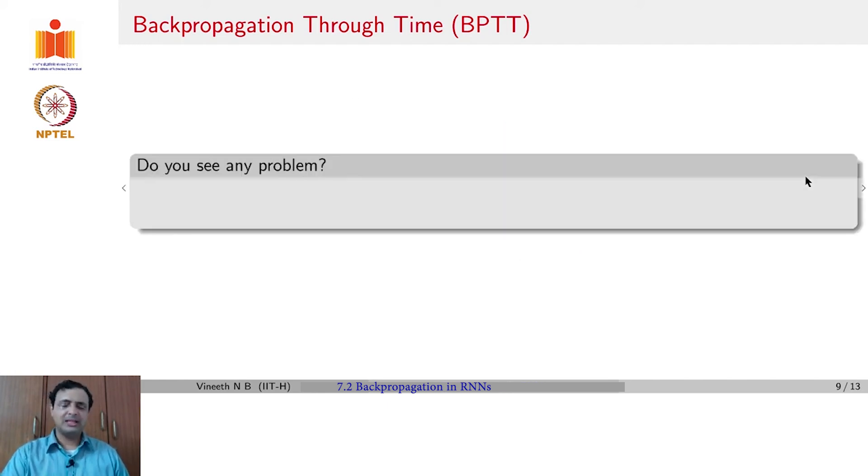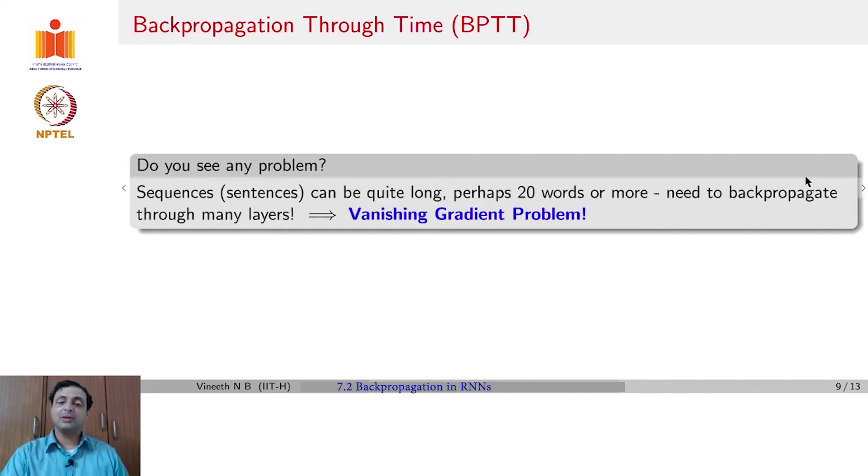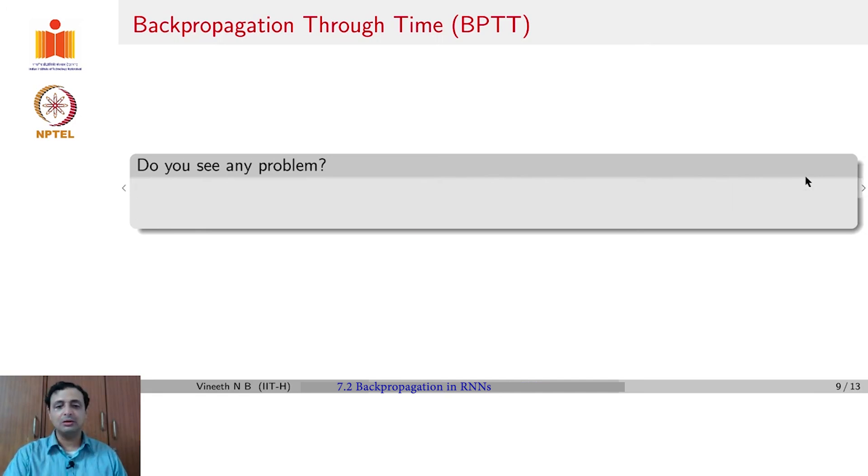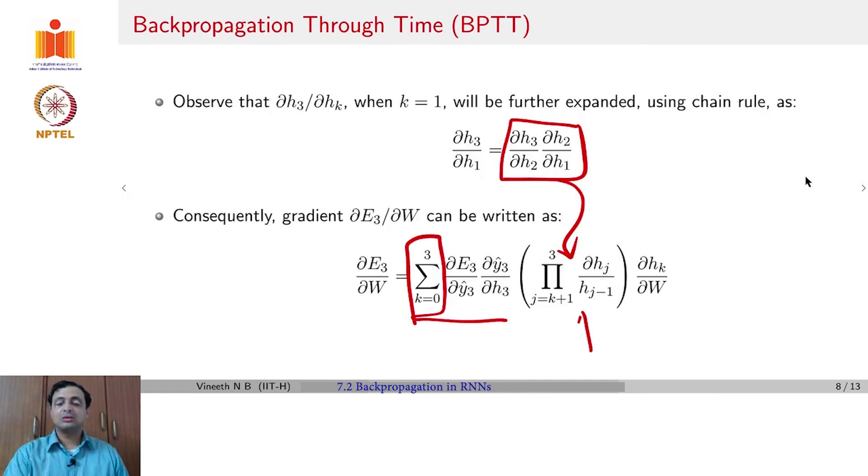Do you see any problem in this particular approach? If you thought carefully, you will realize that RNNs are often used for time series data that can be reasonably long. You could be using it for data that has 20 time steps, 50 time steps, 100 time steps, depending on the nature of the problem that you are dealing with. When you now backpropagate, you are going to be multiplying the gradients across all of these time steps. If you saw on the slide earlier, you would have this term which continues to multiply these activations across multiple time steps.